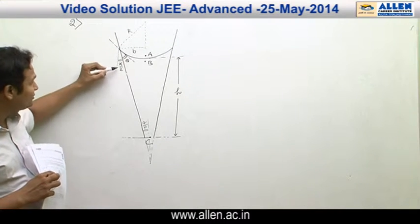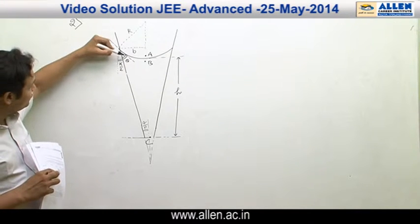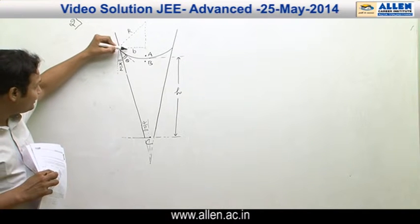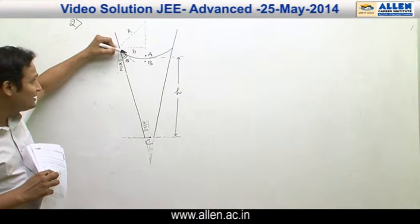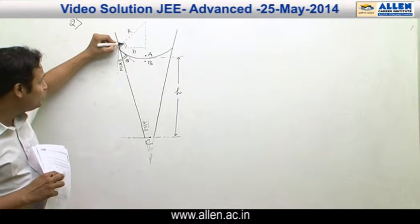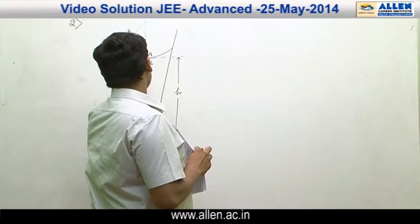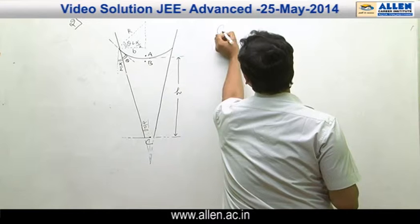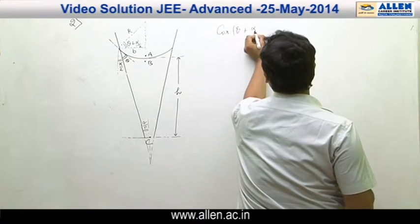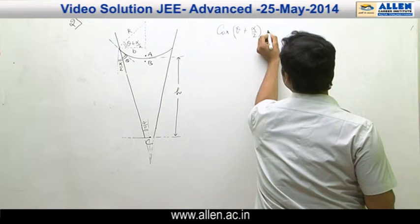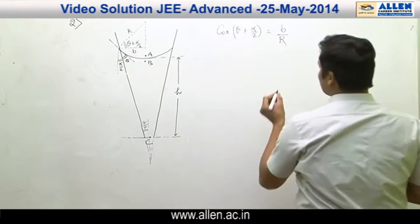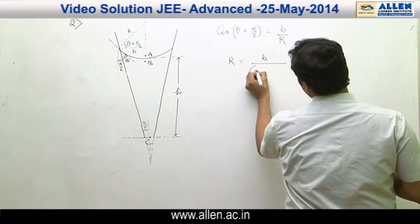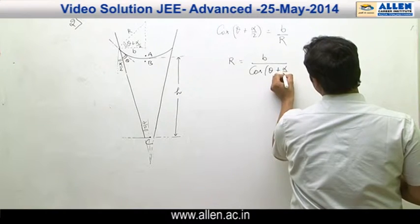If this angle is alpha by 2, then this angle will also be alpha by 2, so the whole angle becomes theta plus alpha by 2, making the complementary angle 90 minus (theta plus alpha by 2). Hence this angle is theta plus alpha by 2. In this triangle, cos(theta + alpha/2) equals B divided by R, so R equals B divided by cos(theta + alpha/2).